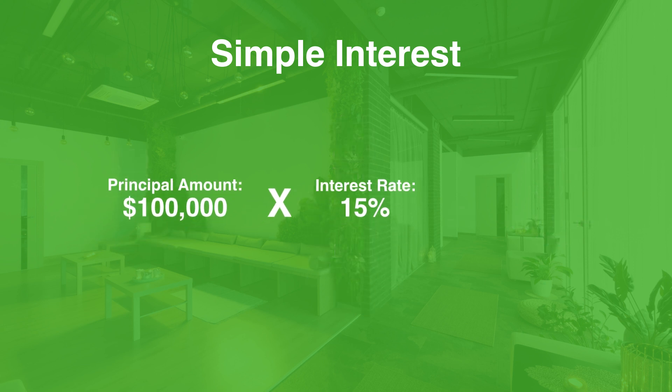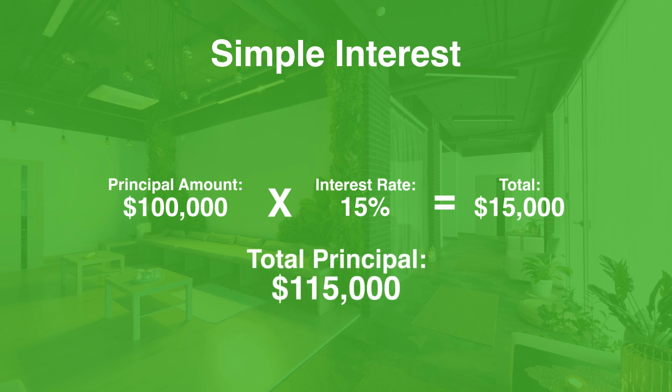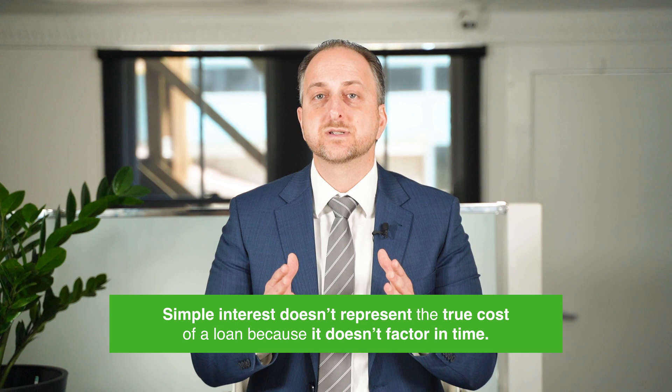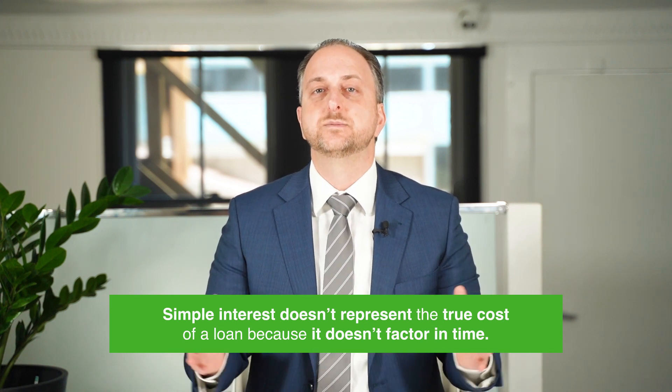So in this example, it would be $100,000 times 15%, which equals $15,000. This means that the total principal and interest paid back is $115,000. It's important to realize here, though, that simple interest doesn't represent the true cost of a loan because it doesn't factor in time. It only tells you how much interest is due on the principal at a single point in time — it doesn't calculate the cost of repaying interest over an extended repayment period.